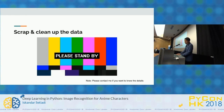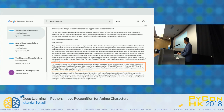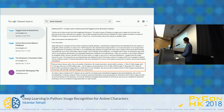Does anyone here know about Google Dataset Search? Google introduced this dataset search around September this year. If you're working with machine learning, I recommend using this feature — for example, I searched for anime characters and it gave me a dataset from Danbooru on Kaggle. So from Google Dataset Search, you can find a lot of useful datasets that might help you build your machine learning model.